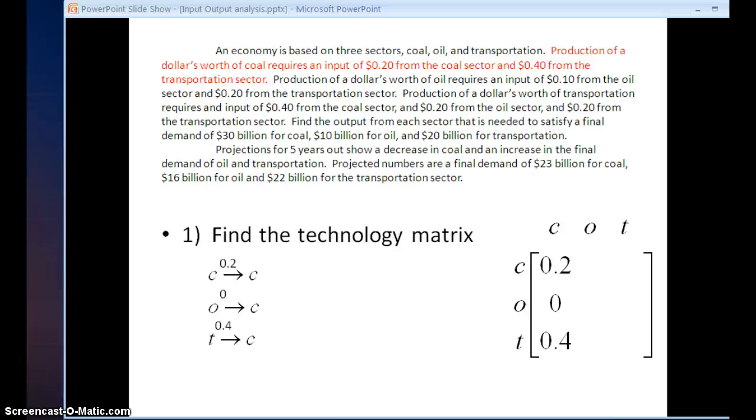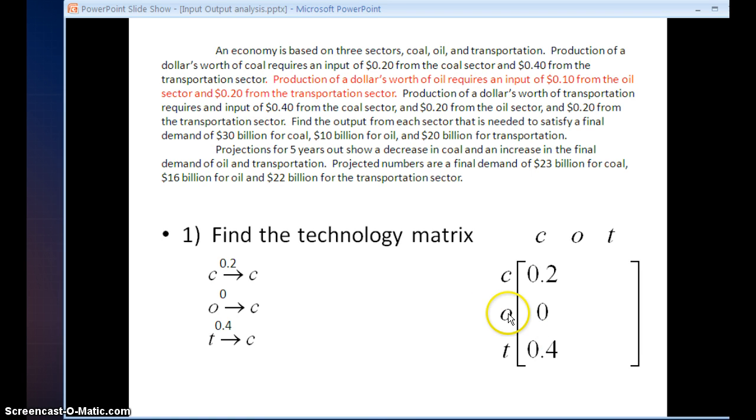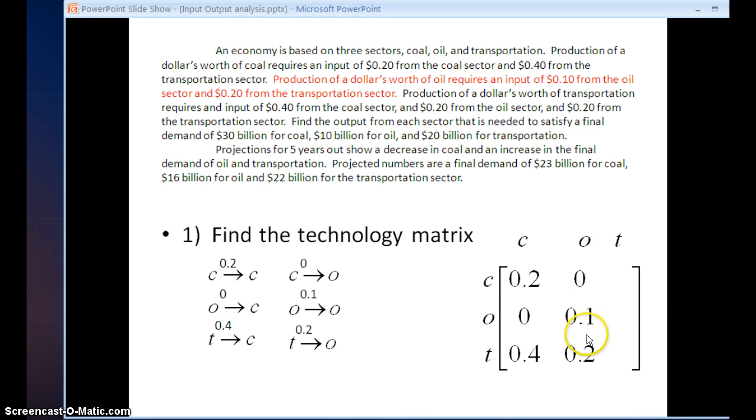Now I'm ready to move to my second sentence. This time I'm looking at the cost of coal, oil, and transportation on the production of oil. So again, I set up the arrows. And reading through the sentence, I fill in the dollar amount. So production of a dollar's worth of oil requires nothing from coal, 10 cents from oil, and 20 cents from transportation. Again, I'm going to take these numbers and transfer them into my technology matrix, filling in the column under oil.